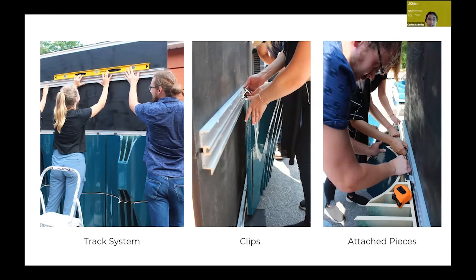The first part involved installing the tracks horizontally. Four equidistant tracks were installed on the board and clips were attached to it, and after which all the pieces were attached with the clips.